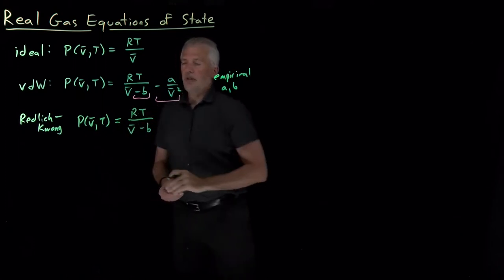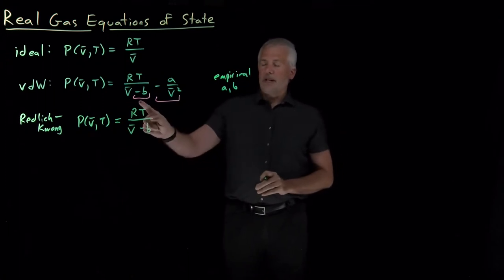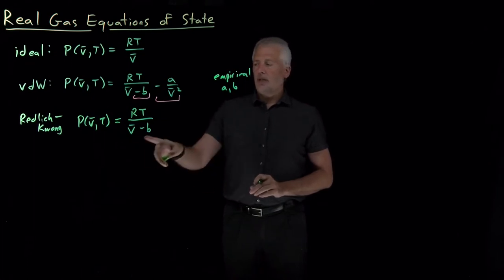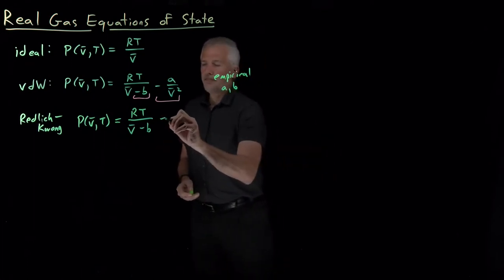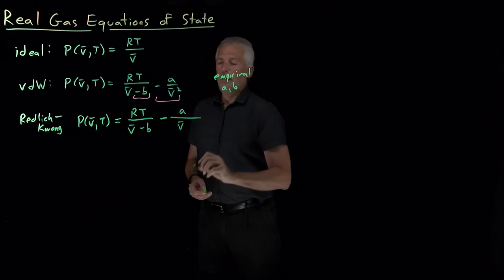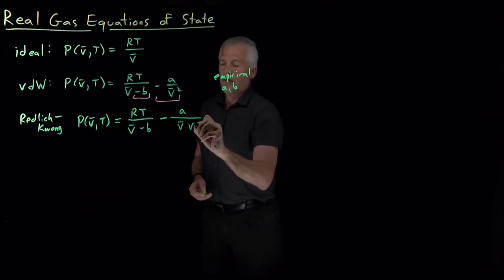The Redlich-Kwong equation of state in particular is similar. The first term looks exactly the same. The effect of the finite volume of the molecules is described well enough by this RT over V bar minus B term that there's no need to adjust or fix that term. The next term looks fairly similar. There's an A constant divided by a V bar and then another V bar, V bar squared.